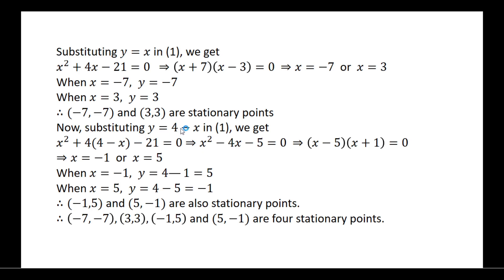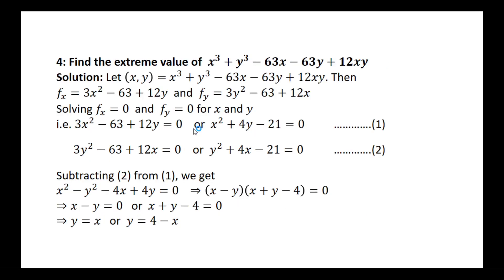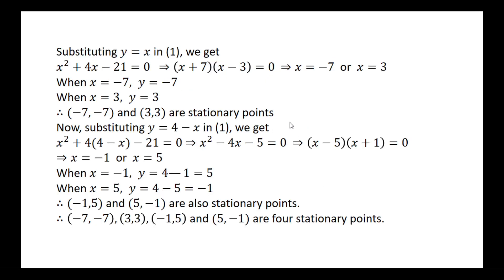Next, substitute y equal to 4 minus x in equation 1. You will get a quadratic equation. After solving the quadratic equation, x equals minus 1 and y equals 5. When x equals minus 1, y is 5, and when x equals 5, y is minus 1. Therefore, the stationary points are (−1, 5) and (5, −1).